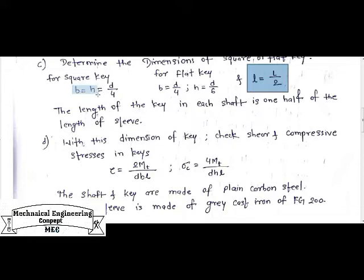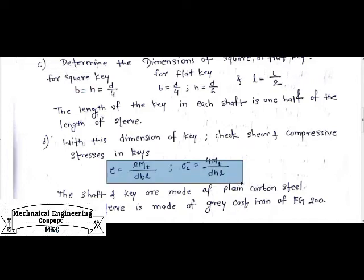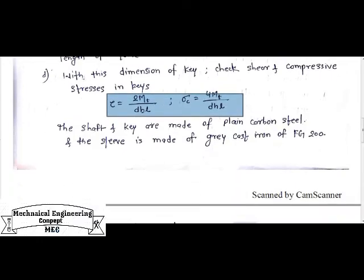In Step D, we need to check whether the width and height of the key are safe enough to bear the torque between the shaft and sleeve. We use the basic shear stress and compressive stress relations, which were derived in previous lectures. If the permissible shear stress and permissible compressive stress are more than the induced stress, then the component will be safe.